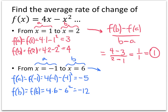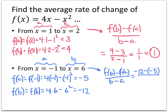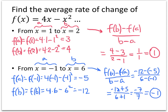So what's my average rate of change this time? Again, it's f(b) minus f(a) divided by b minus a. Plugging in everything: f(b) is negative 12, f(a) is negative 5, b is 6, and a is negative 1. So on the top I have negative 12 minus negative 5, which is negative 12 plus 5. On the bottom I have 6 minus negative 1, so that's 6 plus 1. On the top I get negative 7, on the bottom I get positive 7. Negative 7 divided by 7 is negative 1, and that's our answer.